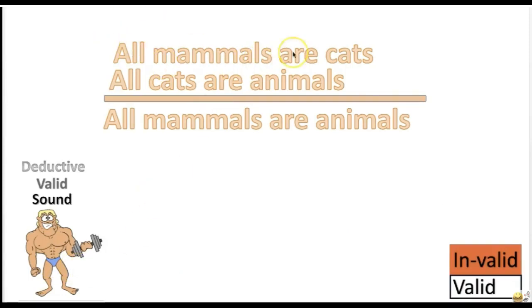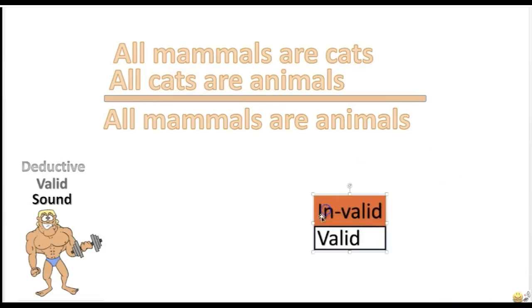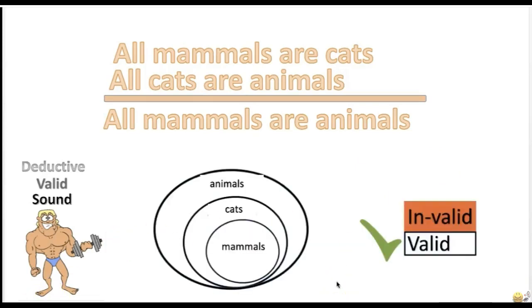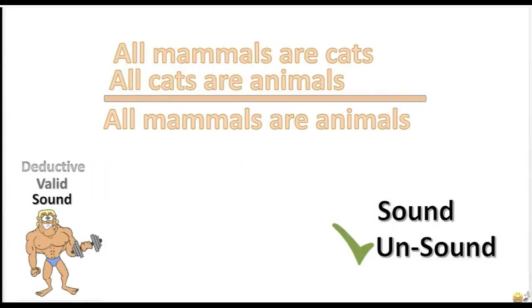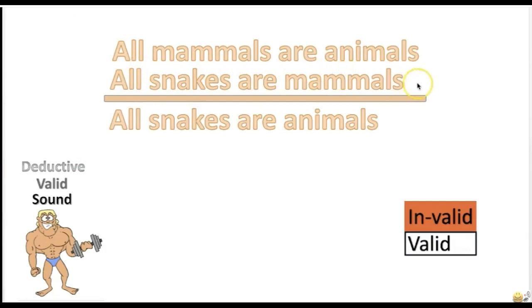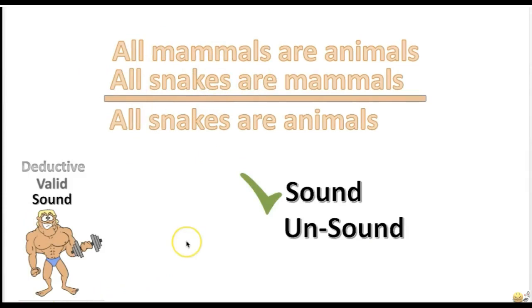Practice: 'All mammals are cats. All cats are animals. Therefore, all mammals are animals.' Valid? Yes — the conclusion follows necessarily from the premises. Sound? No — unsound because the first premise is false. Next: 'All mammals are animals. All snakes are mammals. Therefore, all snakes are animals.' Valid? Yes — reading the second premise first, the conclusion does follow necessarily. Sound? Yes — the argument is valid and both premises are true, so it's sound.